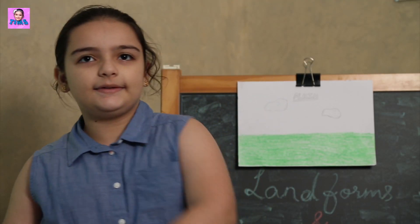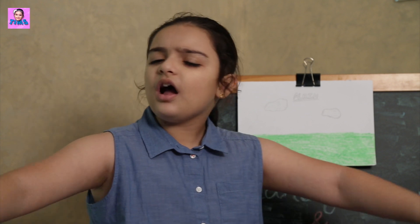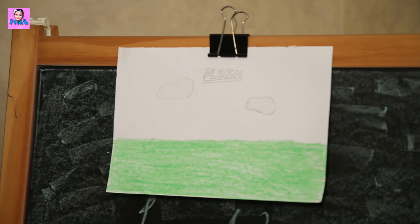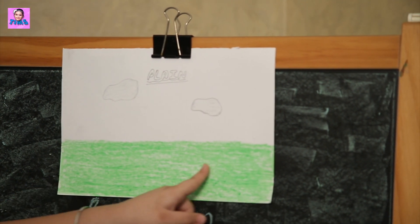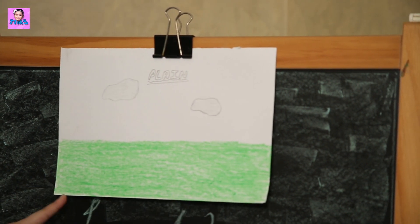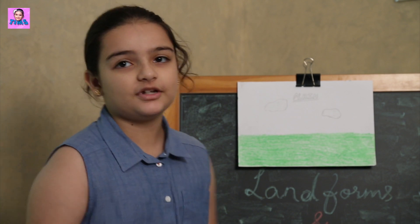Moving on is plain. A plain is a large flat area of grassy land — you can see that right here. If you go to North India you can see lots of plains. I've seen lots of these landforms in North India.